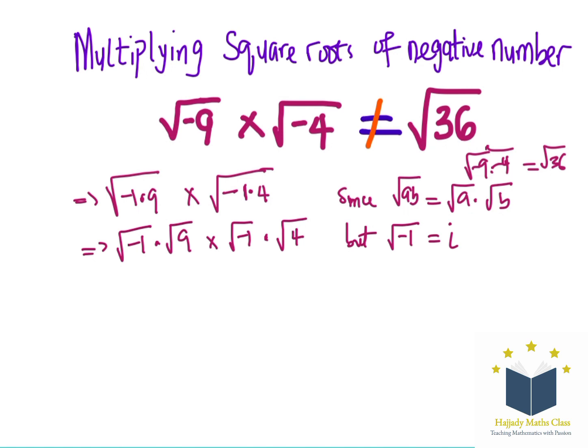Doing that now, I'm going to have root negative 1 to be i times the root of 9 multiplied by i times the root of 4.